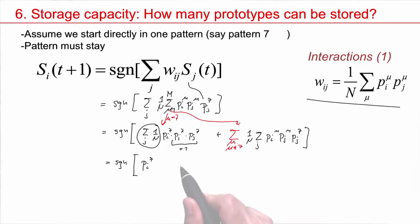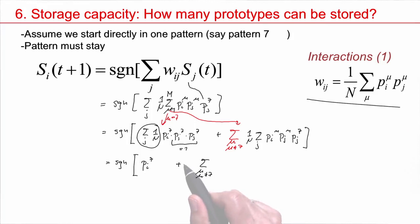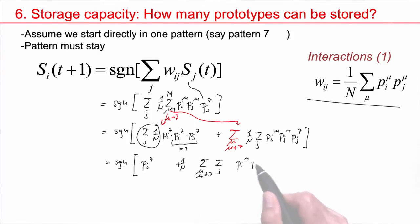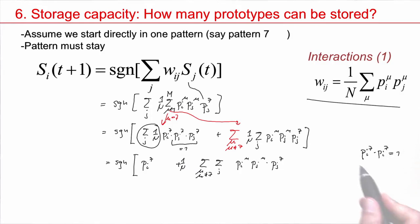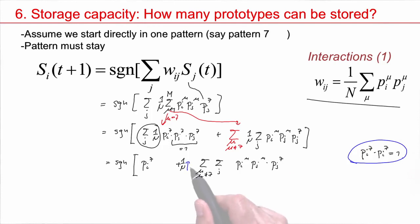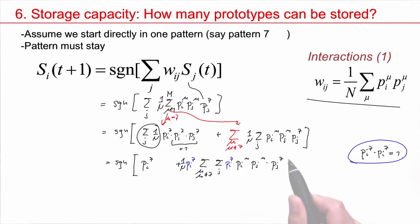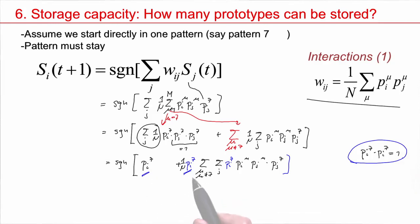Now let's look at the other term. I have a plus, then I have a sum over all patterns mu except pattern 7, I have a 1 over n, then I have a sum over j, and then I have p_i^mu · p_j^mu · p_j^7. This term looks complicated, but let's make it just a little bit more complicated. We have seen that p_j^7 times p_j^7 is always 1. Same is true for p_i^7 times p_i^7 — always equal to 1.